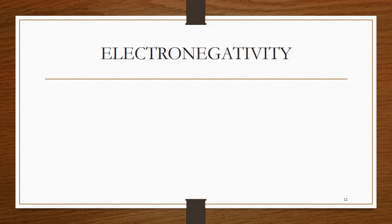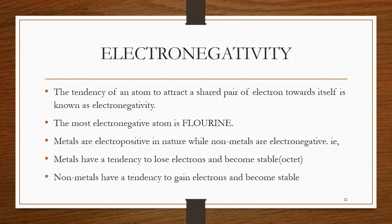The next point is electronegativity — the tendency of an atom to attract a shared pair of electrons towards itself. The most electronegative atom is the one smallest in size, which is fluorine. Generally speaking, metals are electropositive in nature, meaning they lose electrons and become stable. Whereas non-metals are electronegative in nature — they gain electrons or attract a shared pair of electrons towards themselves to become stable. As a result, non-metals are more electronegative compared to metals.